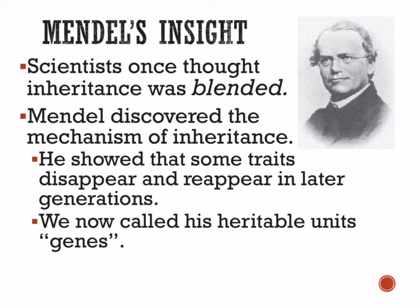But Gregor Mendel was the one who actually discovered that inheritance doesn't happen that way. He discovered that some traits will disappear in a generation. So sometimes red and white don't make pink — in fact, red and white sometimes makes red. That's what he discovered: sometimes these traits will disappear and then reappear later in the grandchildren or great-grandchildren.